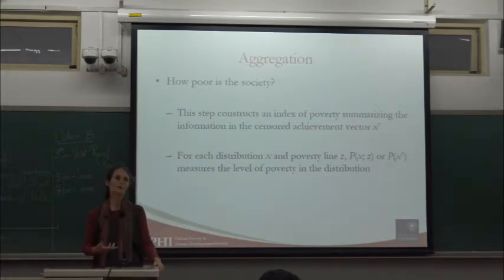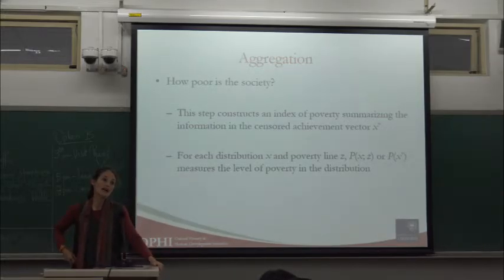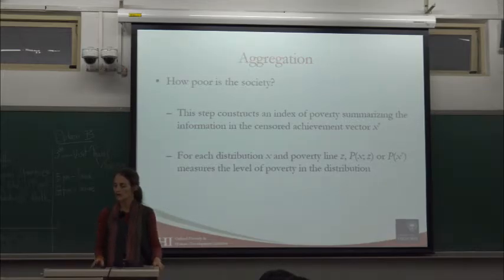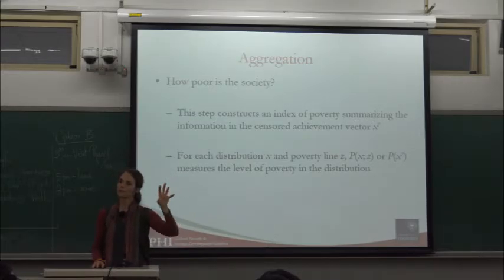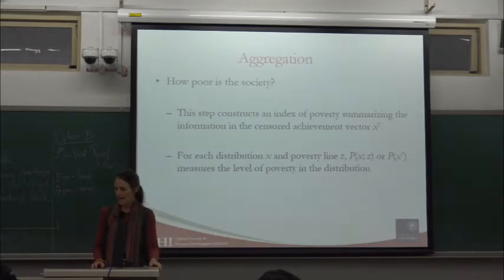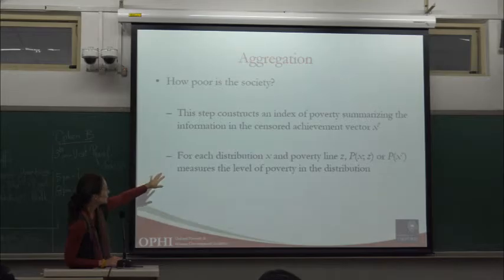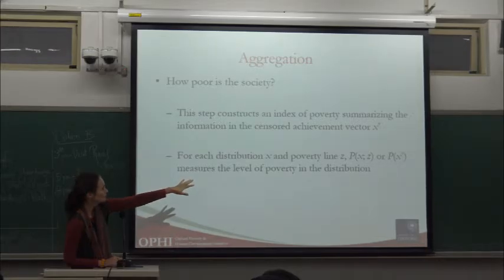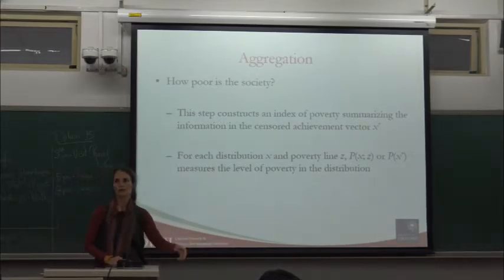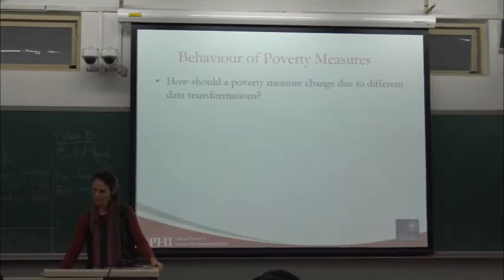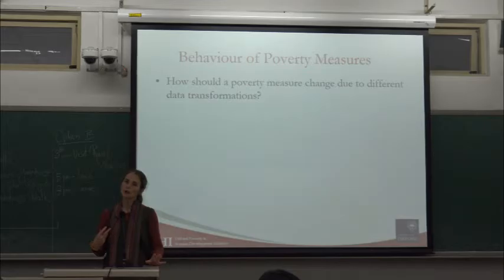Once we've identified the poor, the aggregation step answers: how poor is the society? We summarize all information on poor people into a scalar — a number. The poverty of distribution X given poverty line Z is what we're looking for. So what kinds of poverty measures might we want, and what behavior would we expect? We're going to return to properties of measures.